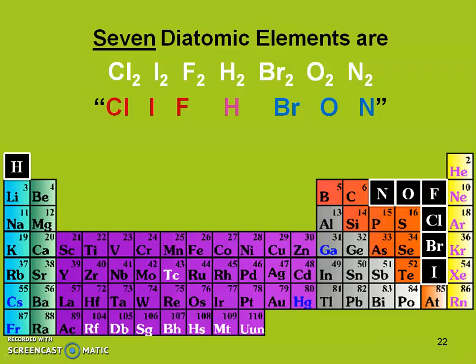Remember those seven diatomic molecules, I always remember as Cliff H. Braun. You can also remember that on your periodic table, nitrogen to fluorine to iodine makes a seven. And of course, hydrogen is your odd man out.